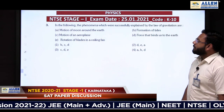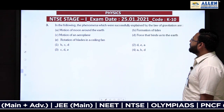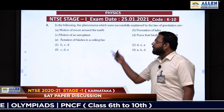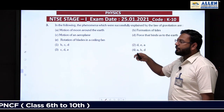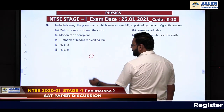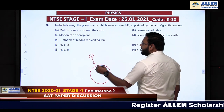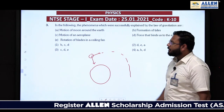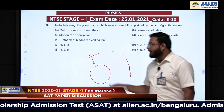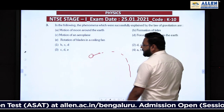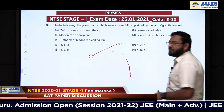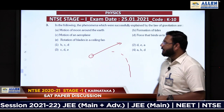Question number 3: Which phenomena are successfully explained by the law of gravitation? The law of gravitation states that any two bodies in the universe attract each other. First option — motion of moon around the earth — is correct, because earth constantly attracts the moon, causing it to move in a circular path. If earth were not there, the moon would continue in a straight path according to the law of inertia.